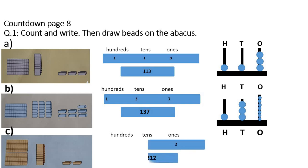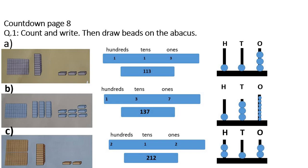Now we will do part C. How many hundreds? 200. How many tens? 1 ten. How many ones? 2 ones. Once you count these blocks, bar, and small blocks, you will write your answer: 212. On the abacus, you will draw 2 beads in hundreds, 1 bead in tens, and 2 beads in ones. Part D and E is your homework.